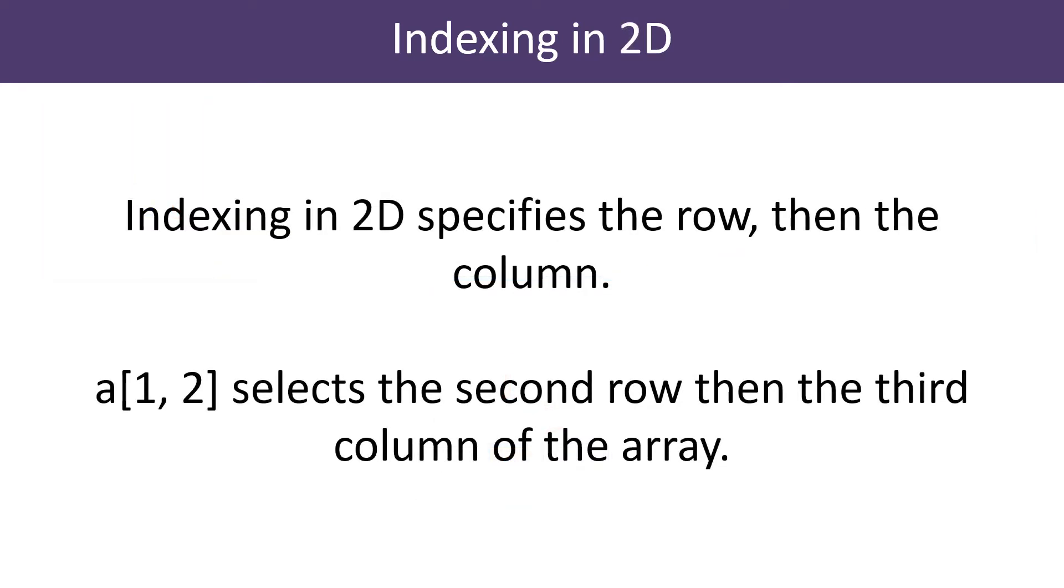For two-dimensional NumPy arrays, the element is indexed by two numbers, the row number followed by the column number. For example a[1,2] selects the second row, then the third column.